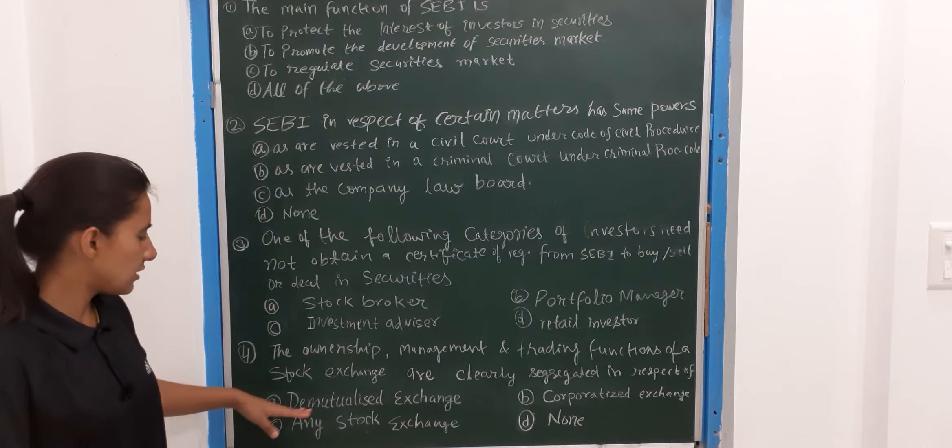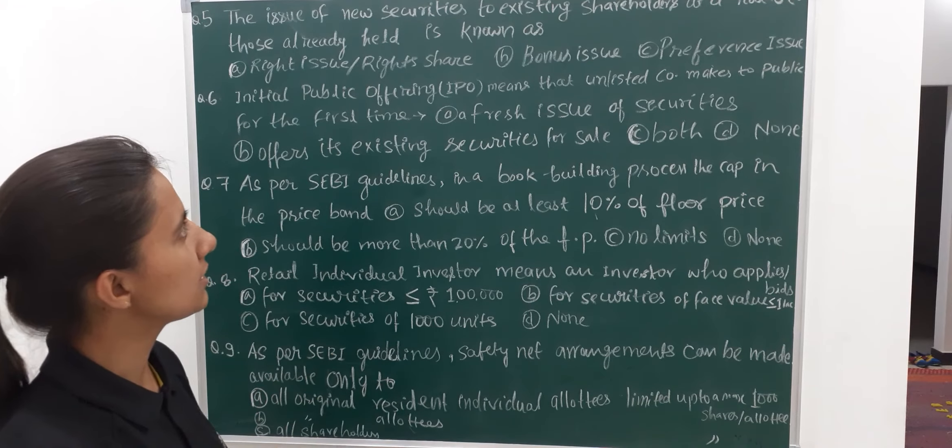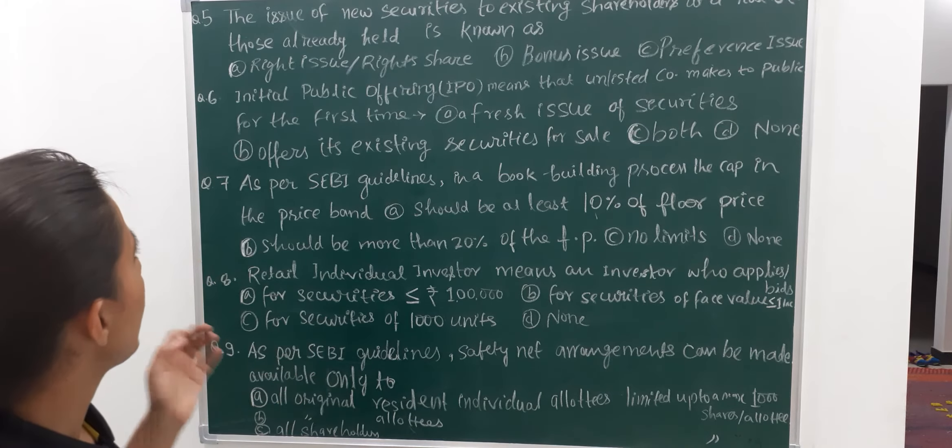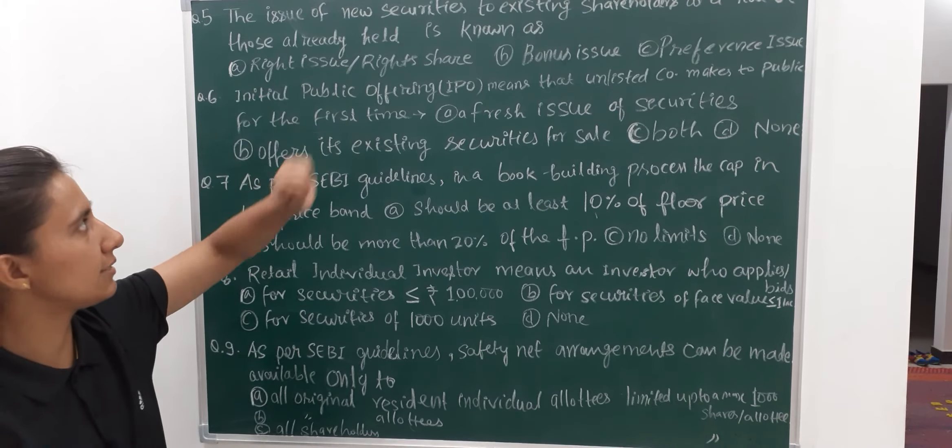Fifth question: the issue of new securities to existing shareholders at a ratio to those already held is known as — A is rights issue or rights share, B is bonus issue, C is preference issue, D is none. The correct answer here is rights issue — we call this rights issue or rights share.